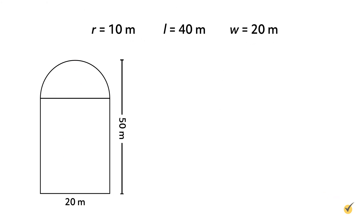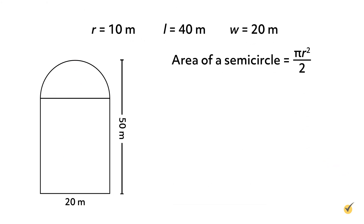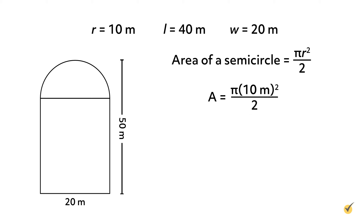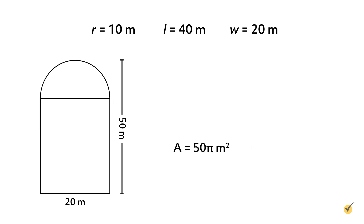Let's find the area of our semicircle first. The area of our semicircle is equal to pi r squared over 2. Our radius is 10 meters. So if we plug in 10 meters, we'll get area is equal to pi times 10 meters squared over 2, which gives us pi times 100 meters squared over 2, which is equal to 50 pi meters squared. The area of our semicircle is 50 pi meters squared.